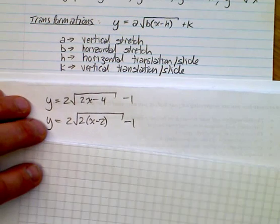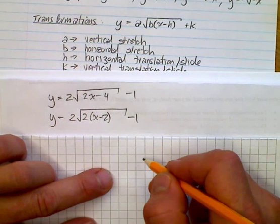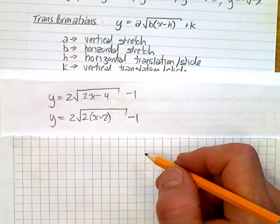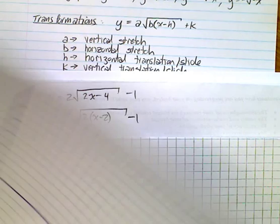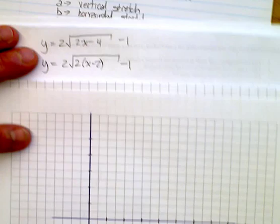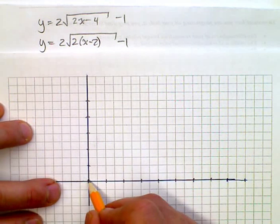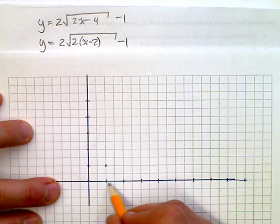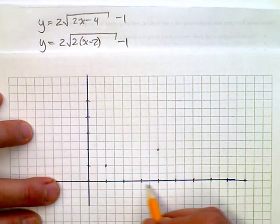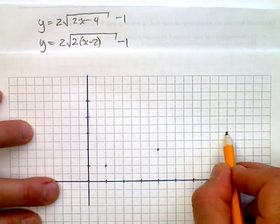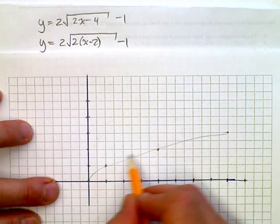Before we graph this, let's think about what's happening — it's still in the positive quadrant. Here's the original function: (1, 1), (4, 2) — I've made these a bit bigger — and (9, 3), since the square root of 9 is 3. So that's my original function plotted.